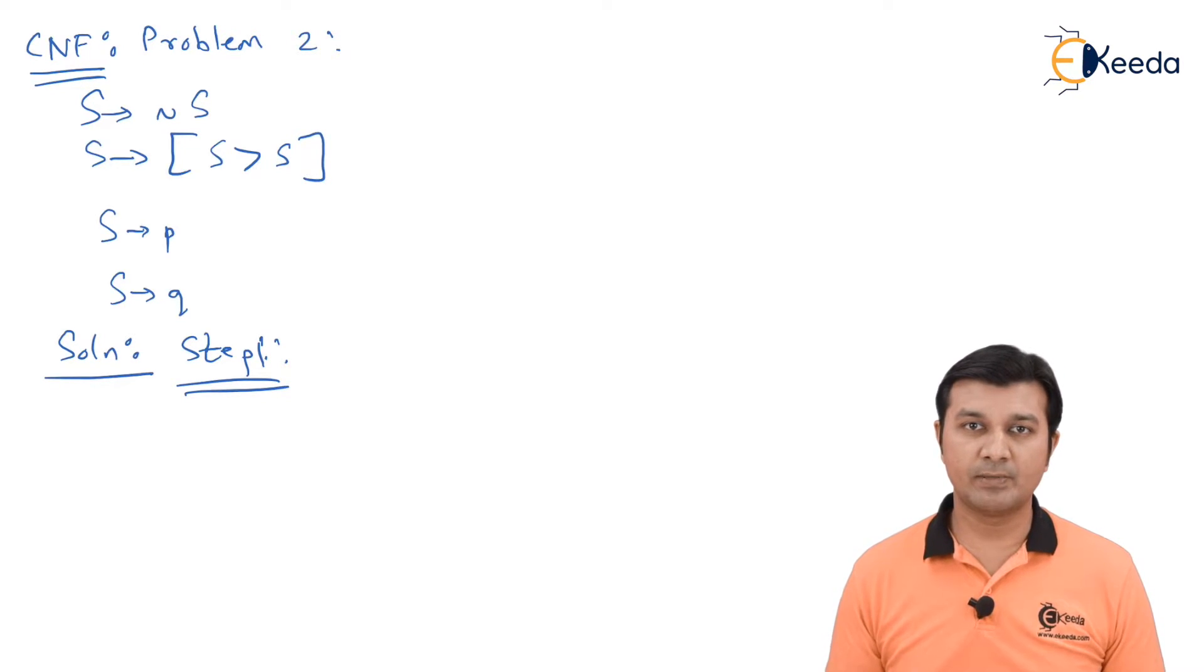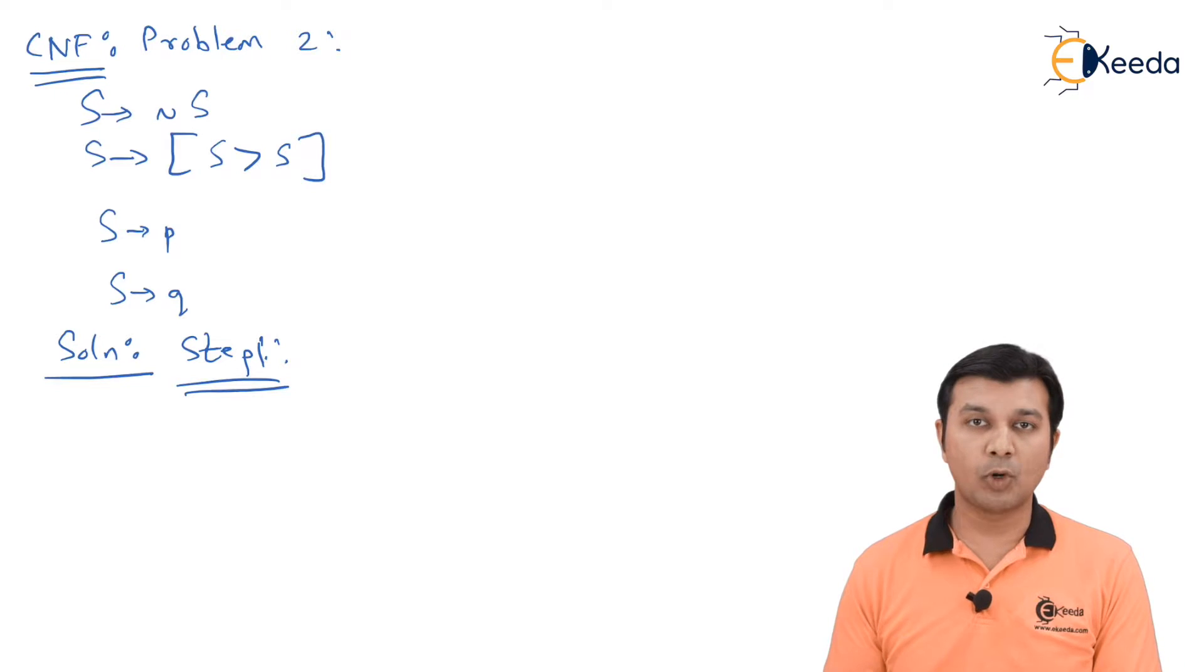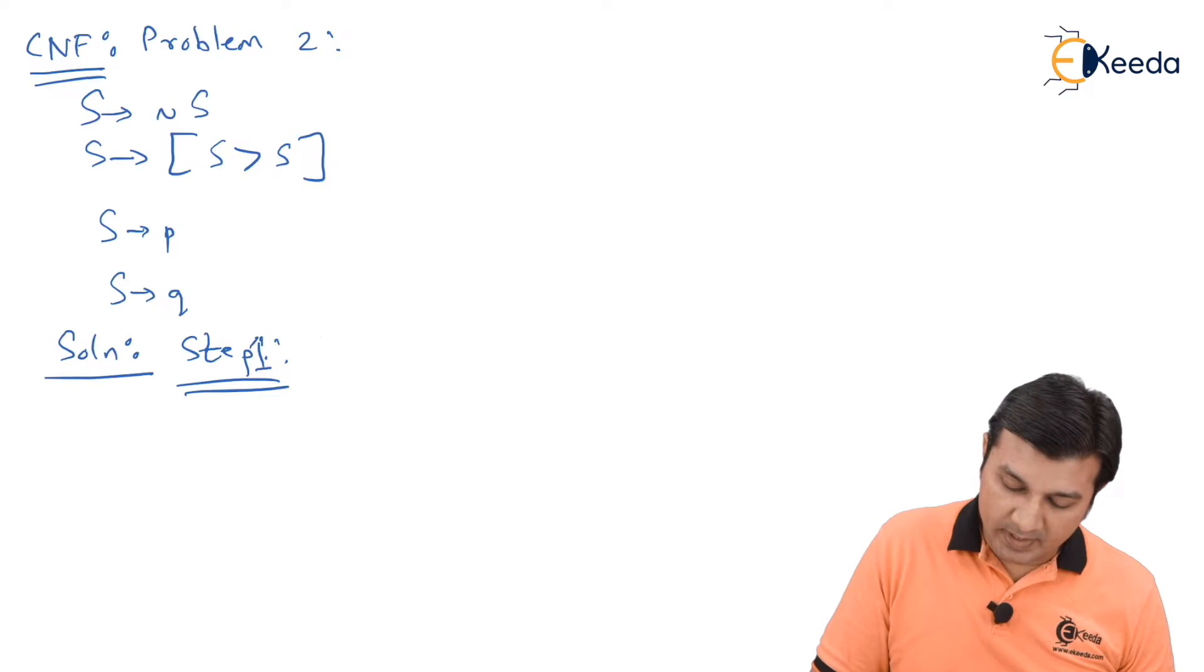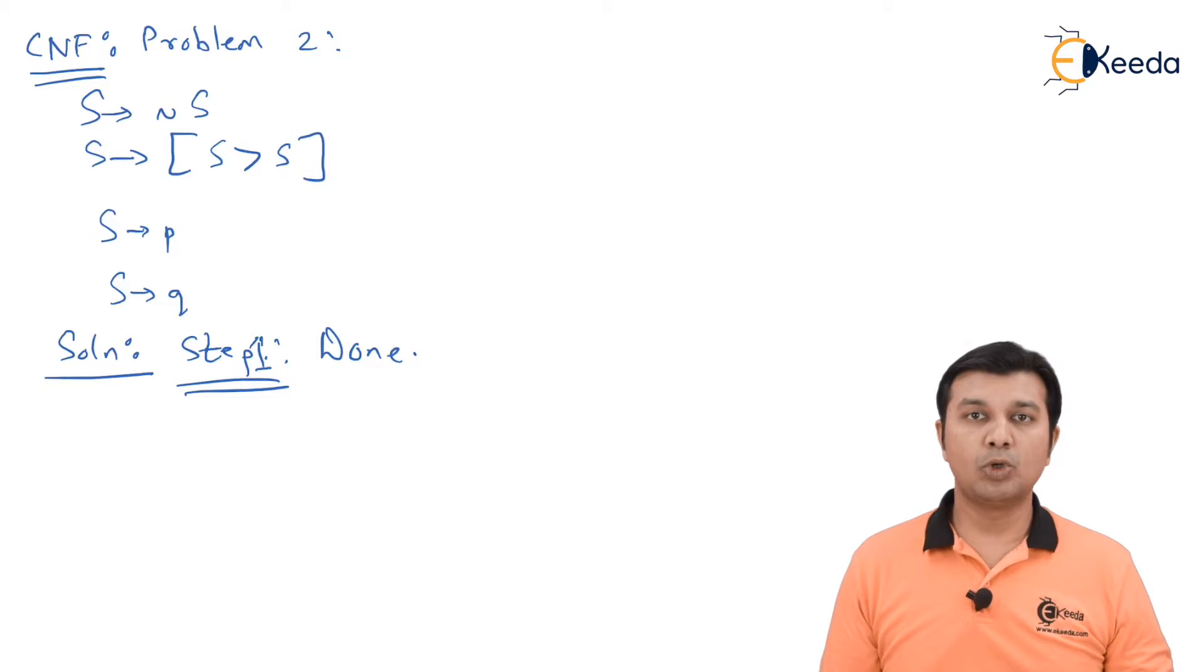The second says that it should be capable of deriving a sentence. Yes, S can very well derive a sentence because S is landing finally in two terminals, small p and small q. So I do not see any useless variables also. I can now directly say that my step one is done. Now, we can move on to step two.